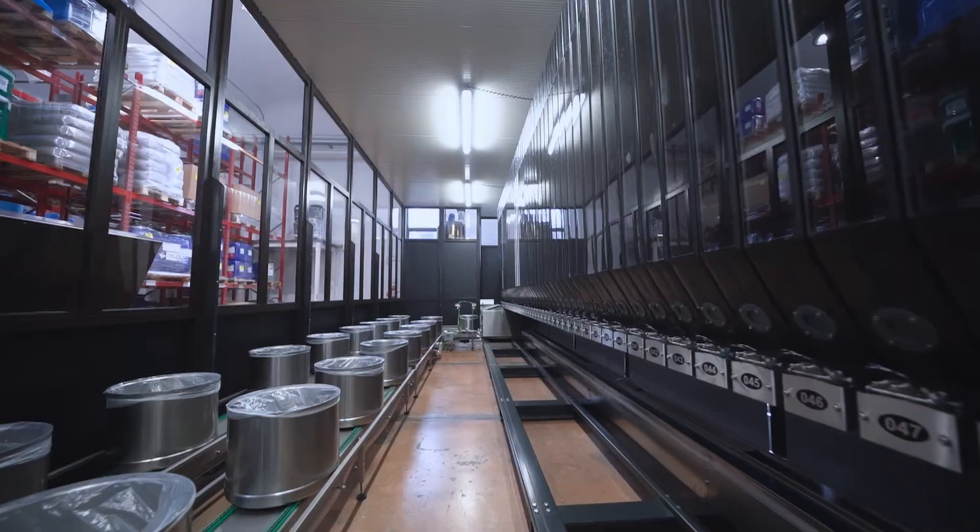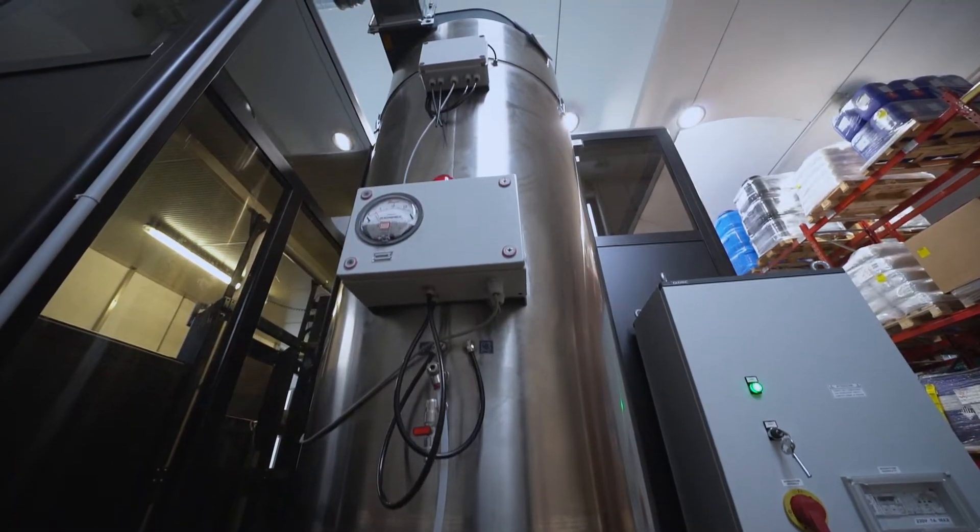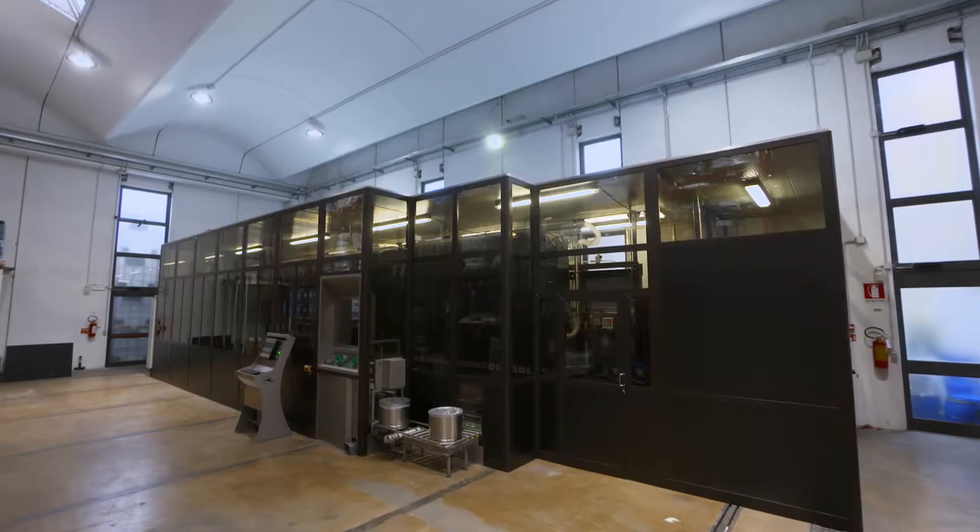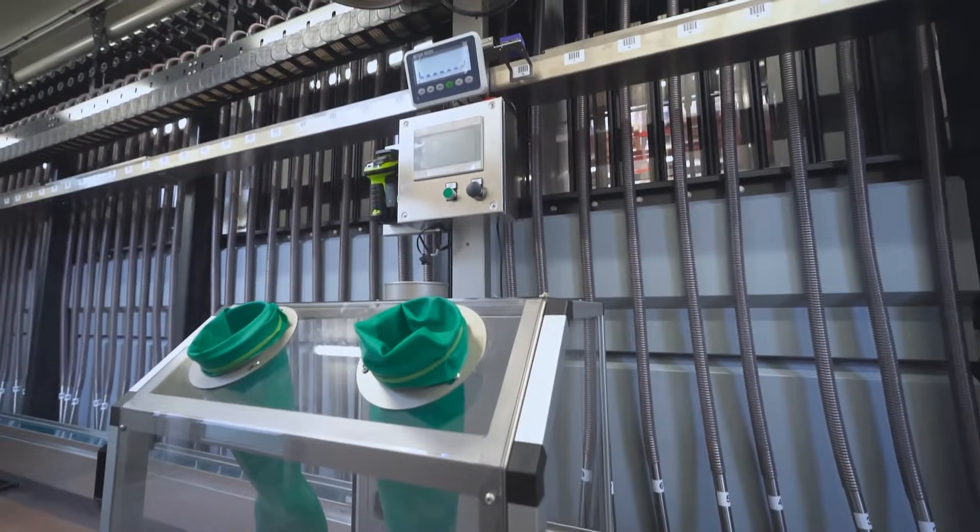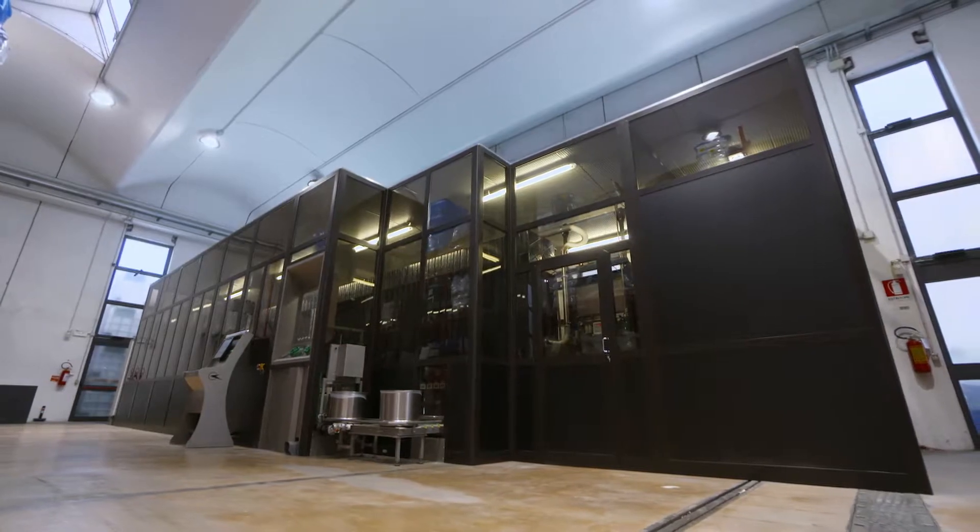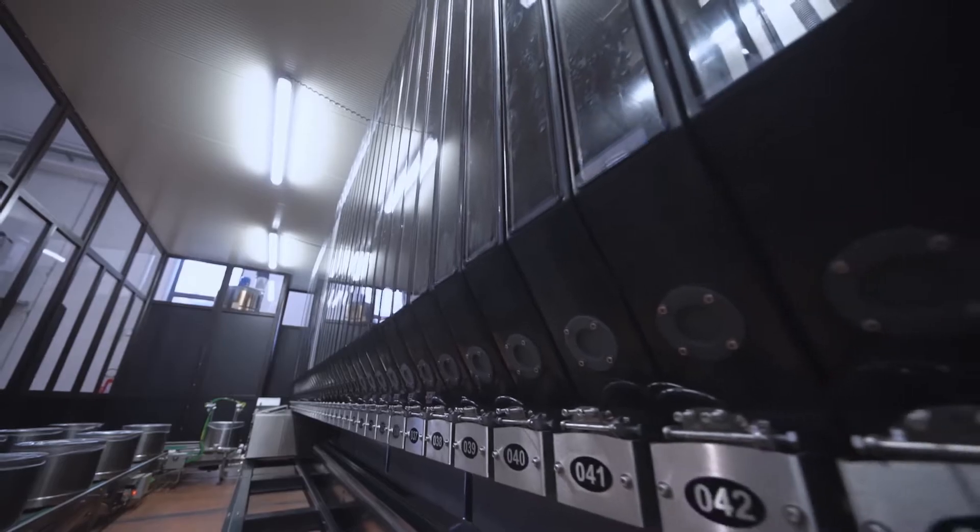SuperColor ID.Tag is an automatic dispenser of powder products for the preparation of recipes in sectors such as cosmetics, paints, food, textiles, plastic and rubber. SuperColor ID.Tag operates in a booth made airtight utilizing polycarbonate panels.